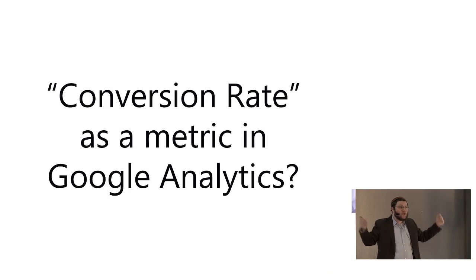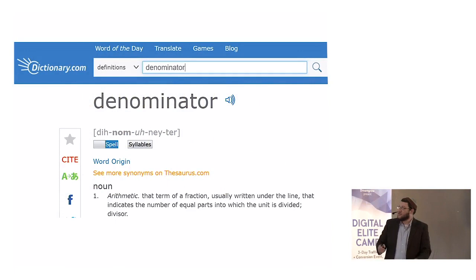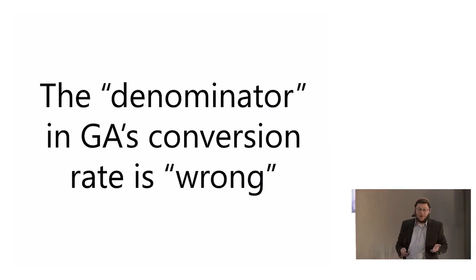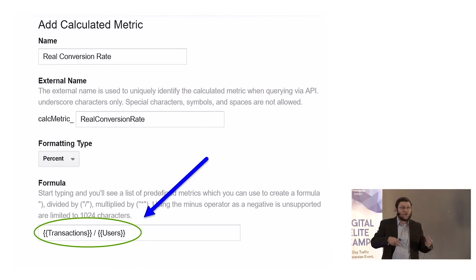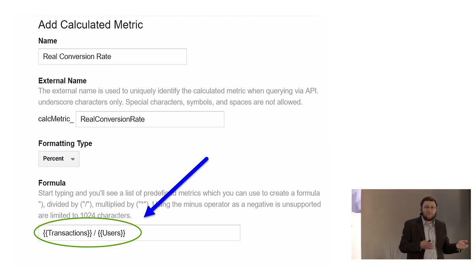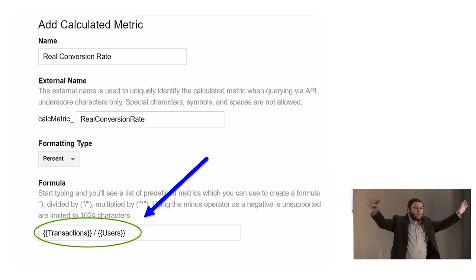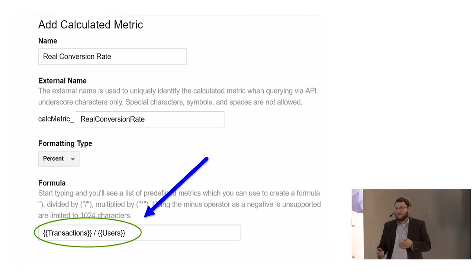A parenthetical note: whoever uses a metric called conversion rate or e-commerce conversion rate in Google Analytics — the thing about conversion rate in GA is that the denominator is wrong. Because in most cases, it's really based on sessions. With calculated metrics, as long as you have the metrics coming in, you can track something like transactions per users. It's not perfect, but it's a lot better than sessions. Using calculated metrics, you can improve the entire system of Google Analytics by looking at user-based metrics instead of session-based metrics.